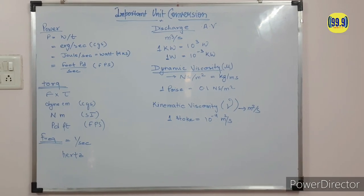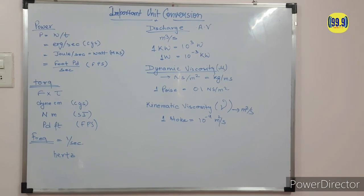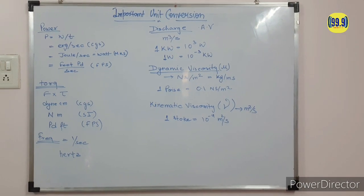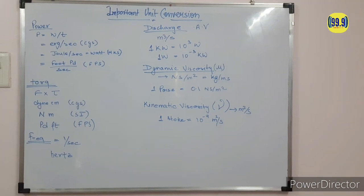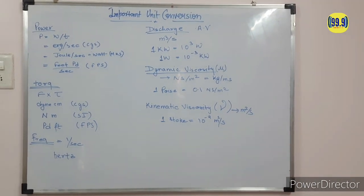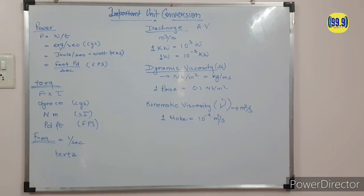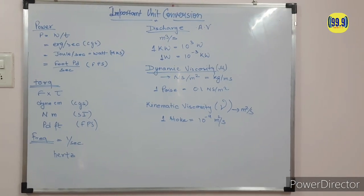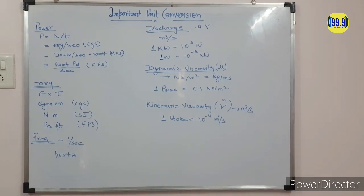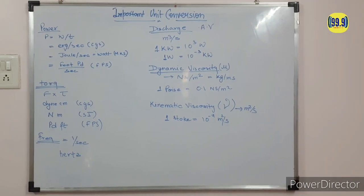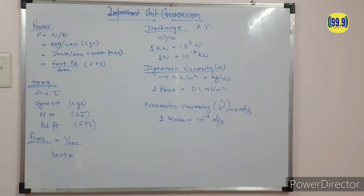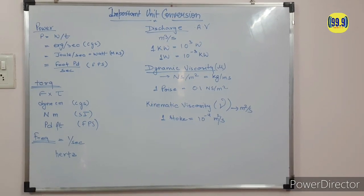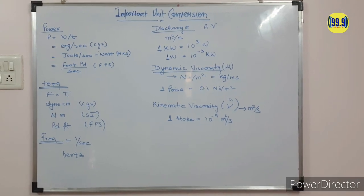1 kilowatt is equal to 10³ watt, and 1 watt is equal to 10⁻³ kilowatt. For dynamic viscosity, its unit is Newton·second per meter square, equal to kg per meter·second. The main unit is Poise, and 1 Poise is equal to 0.1 Newton·second per meter square — this is a very important conversion. For kinematic viscosity, the unit is meter square per second, and 1 Stoke is equal to 10⁻⁴ meter square per second.